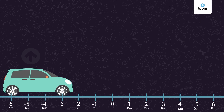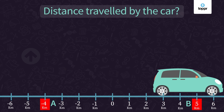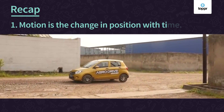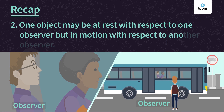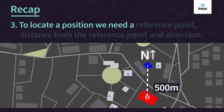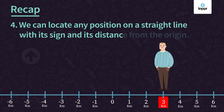Now I have a question for you: if a car moved from one position to another, what was the initial and final position of the car, and how much distance did it travel? Think about it. For now, let's have a quick recap. We learned that motion is the change in position with time. One object may be at rest with respect to one observer but in motion with respect to another observer. To locate a position, we need a reference point, distance from the reference point, and direction. We can locate any position on a straight line with its sign and its distance from the origin. I hope you've enjoyed this lesson. We will learn more about motion in the upcoming sessions. Till then, keep observing moving things around you.